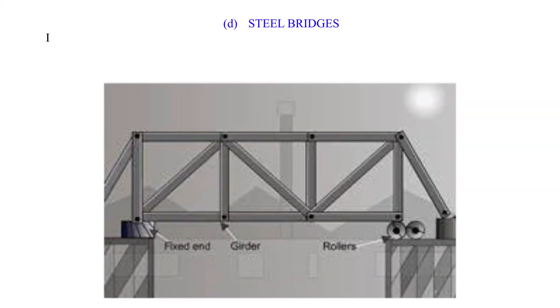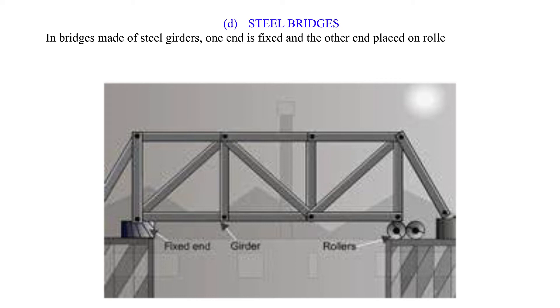D. Steel Bridges: In bridges made of steel girders, one end is fixed and the other end is placed on rollers to allow for expansion, as shown.